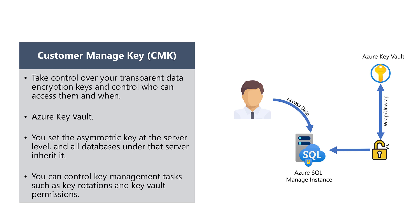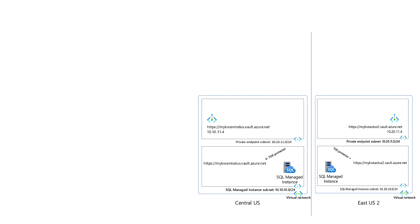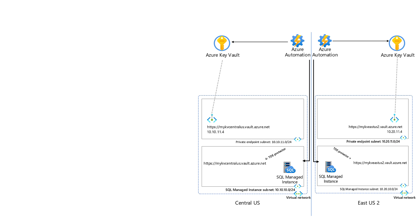Let's dive into the implementation details of a disaster recovery scenario using transparent data encryption with customer managed keys in Azure SQL Managed Instances. For this exercise, envision our primary environment residing in Central US, with our secondary in East US 2. The goal is to establish synchronization between two Azure Key Vaults, ensuring key availability for both environments and addressing potential Azure Key Vault failures. Azure Automation takes center stage, ensuring synchronization of Azure Key Vaults, overseeing key rotation policies, and making certain that keys are synchronized across both Azure Key Vaults. This process also acts as a backup mechanism for our keys.